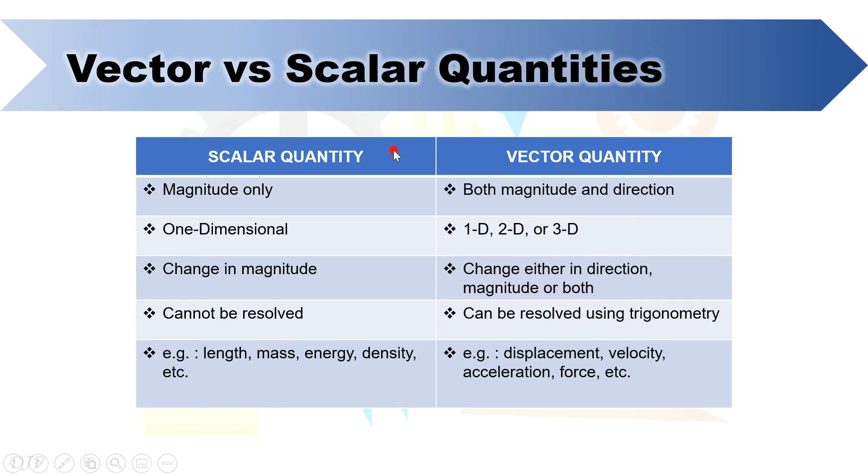Also, scalar quantity cannot be resolved, it means that it has no components, and vector quantities can be resolved using trigonometry. Examples of scalar quantities are length, mass, energy, and density, described only by magnitude, while common examples of vector quantities are displacement, velocity, acceleration, and force.